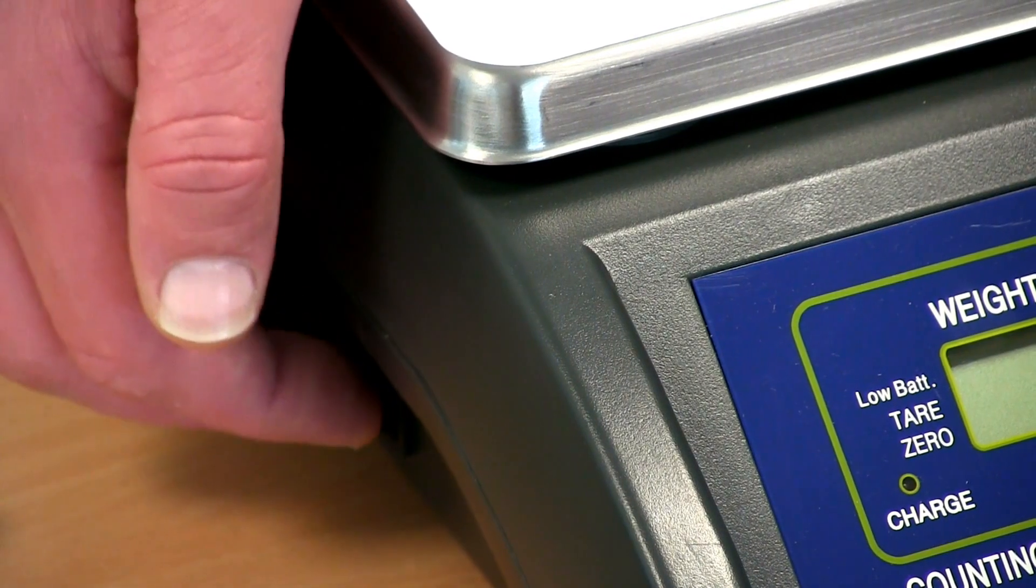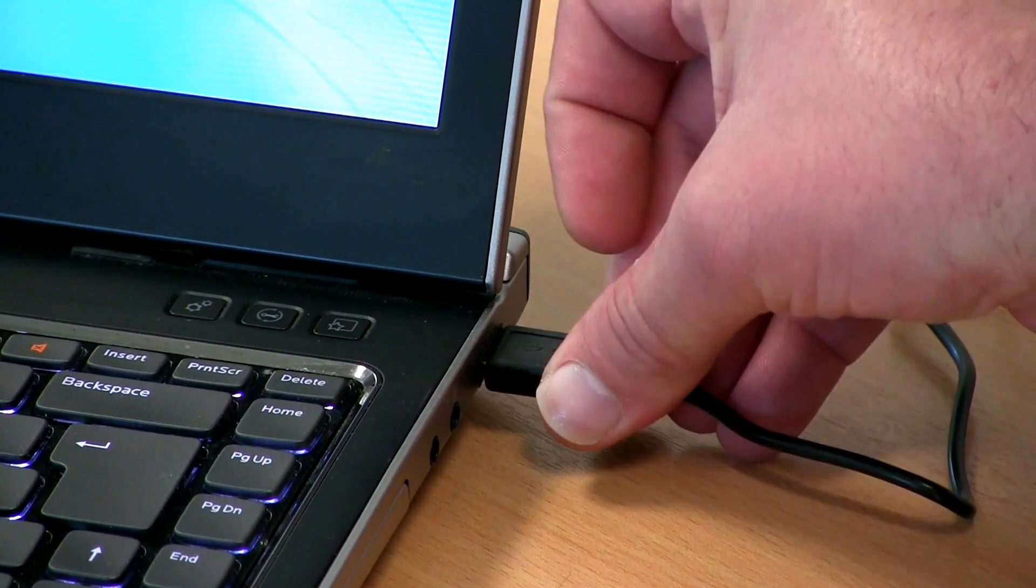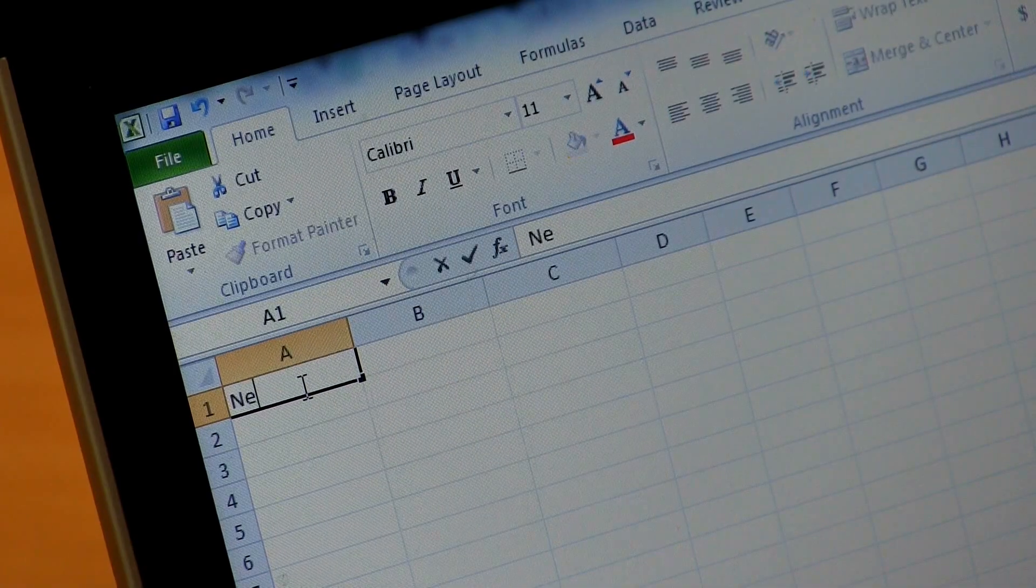Switch the scale on and when you have a display of zeros you're ready to weigh. I'll set up our example with a U key cable to a laptop so I can transfer the weight data into this Excel spreadsheet.